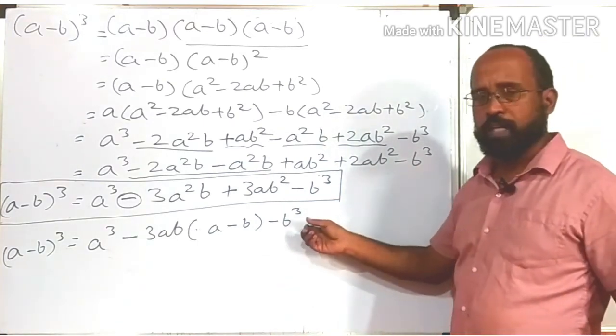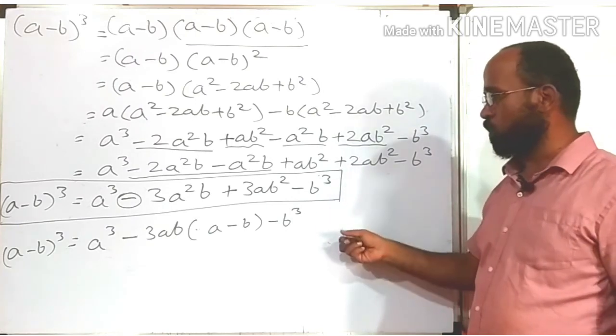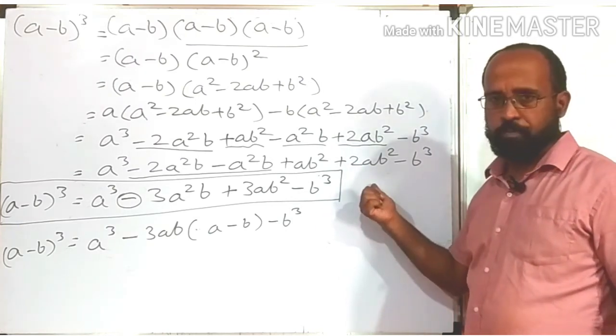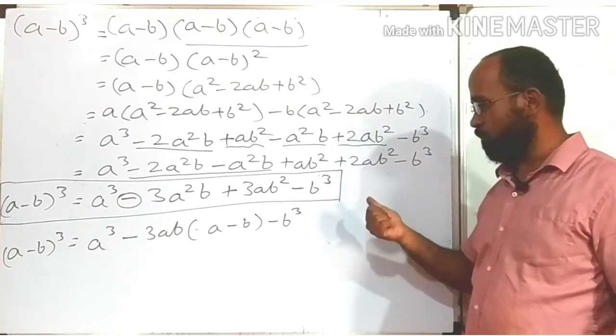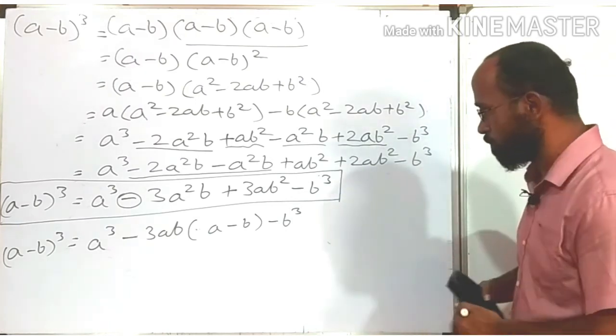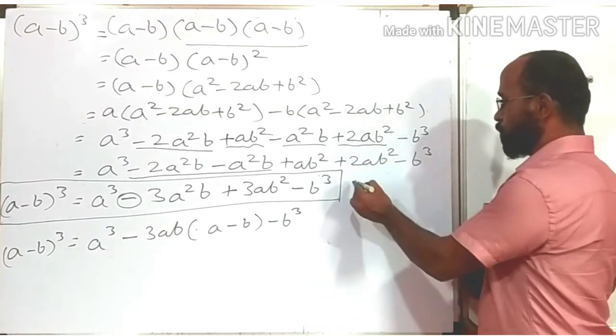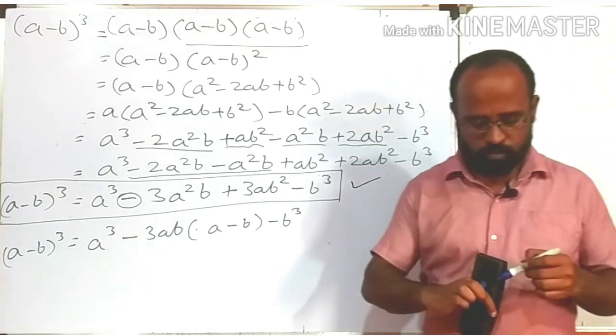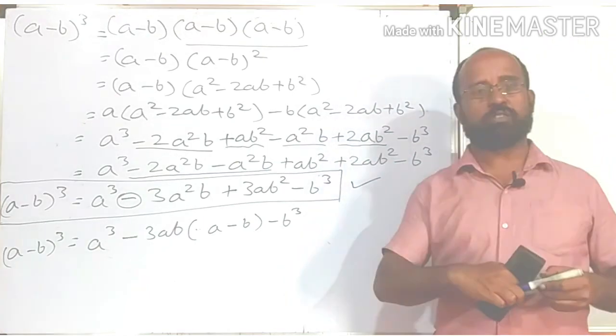We can use either of these two forms. Most of the time — about 90 percent of the time — we are going to use the first one: a³ - 3a²b + 3ab² - b³.